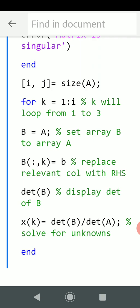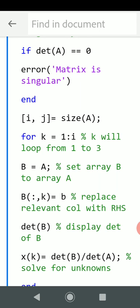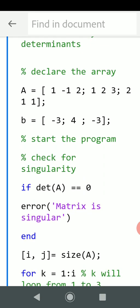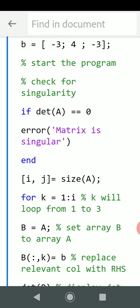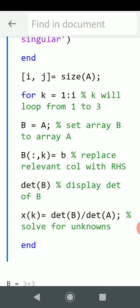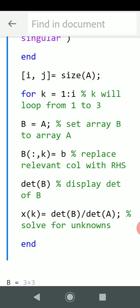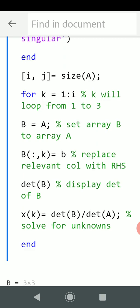For k equals 1 to i, so that's 1 to 3. B equals A, so remember A is the original array there: 1, -1, 2; 1, 2, 3; and 2, 1, 1. And then what we have to do is slot in the relevant right hand side, that's the matrix of constants, into it. So on the first